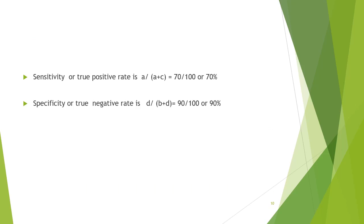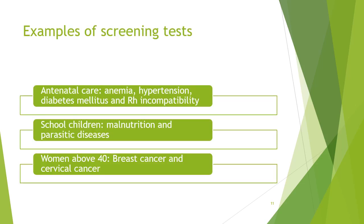Examples of screening tests: in antenatal care, hemoglobin for anemia, blood pressure for hypertension, blood sugar for diabetes mellitus, and RH for incompatibility. For school children, malnutrition and parasitic diseases are screened for. For women above 40, breast cancer is screened by mammography and ultrasonography, and cervical cancer by smear. Many screening tests are present all over the world, and upgrading and updating of screening tests are the subject of ongoing research worldwide.